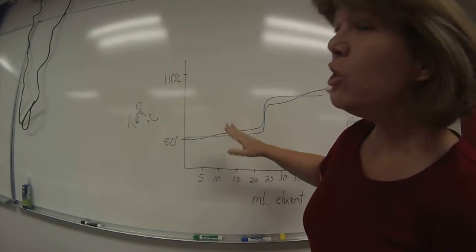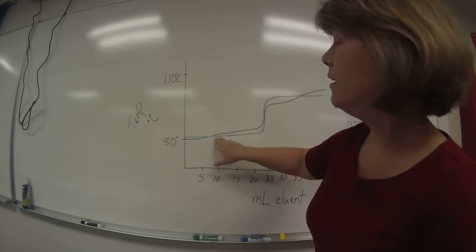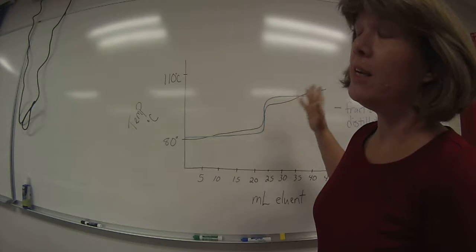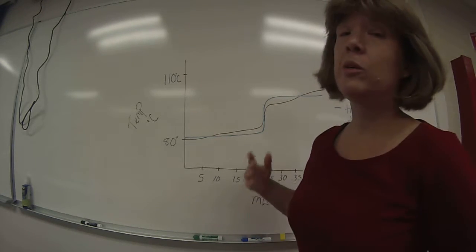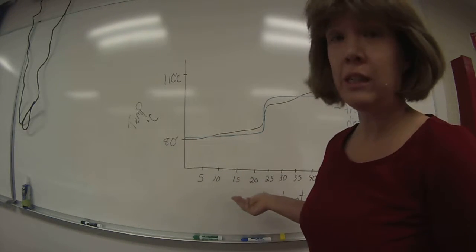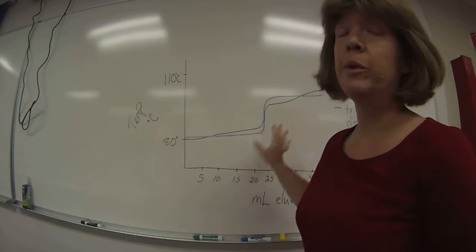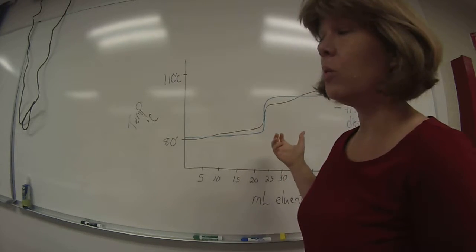So the larger the difference or the more sudden the difference between the first portion and the last portion of the graph, that tells you the more efficient the separation has been. So what you expect is that the fractional distillation will be more efficient and the simple distillation will be less efficient. But you'll be collecting data to see if this is the case or not.